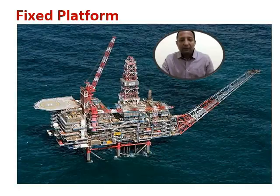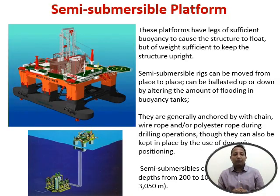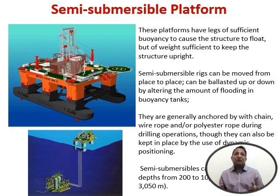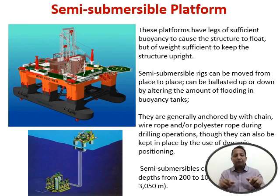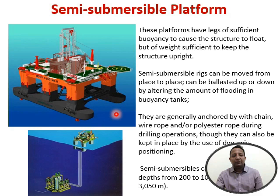The second type is the semi-submersible platform. Semi-submersible platforms have legs with sufficient buoyancy to cause the structure to float, but with sufficient weight to keep the structure upright. This platform is not fixed — it can move from place to place. It is used in water deep enough that a fixed platform cannot be installed. Buoyancy is created by this structure to keep the platform upright.